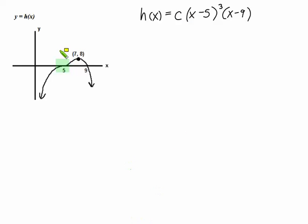In order to determine the coefficient, we'll plug in the point that we know. So our y value is eight. That would replace h of x. And we're plugging in seven in place of x throughout the rest of the equation.